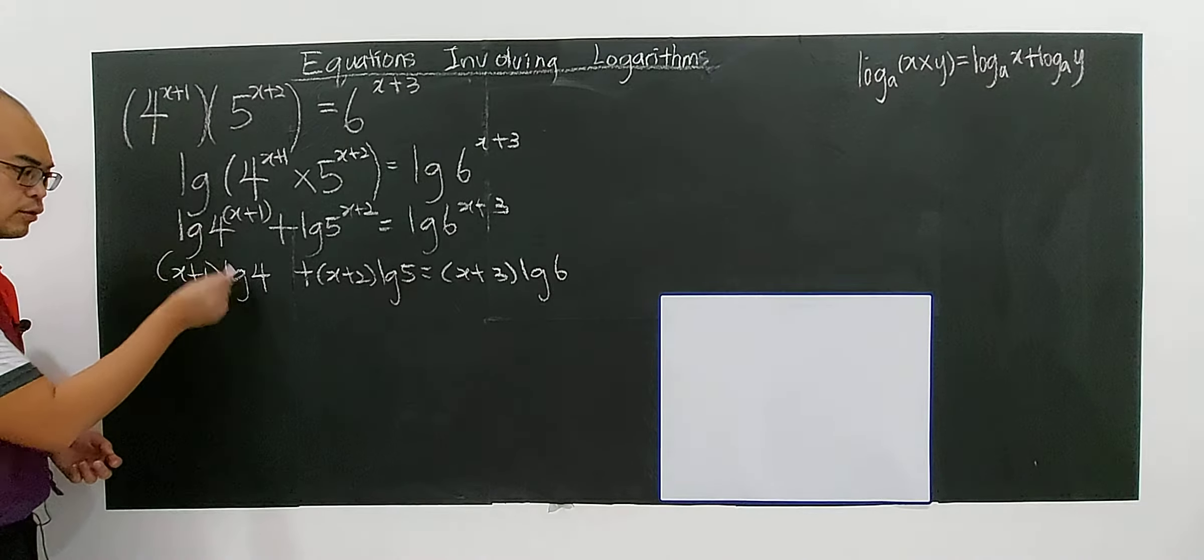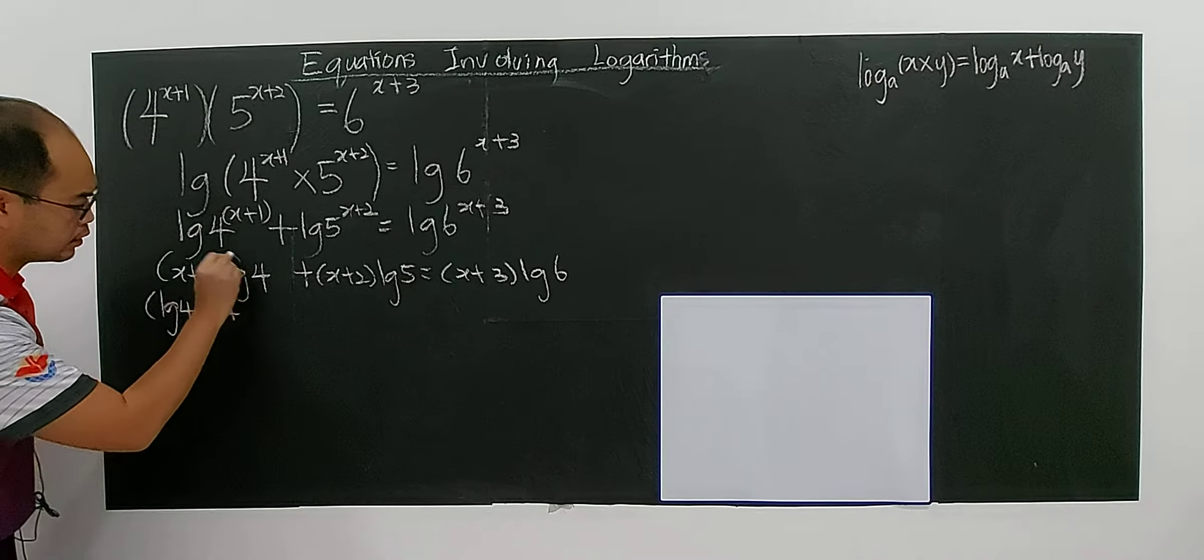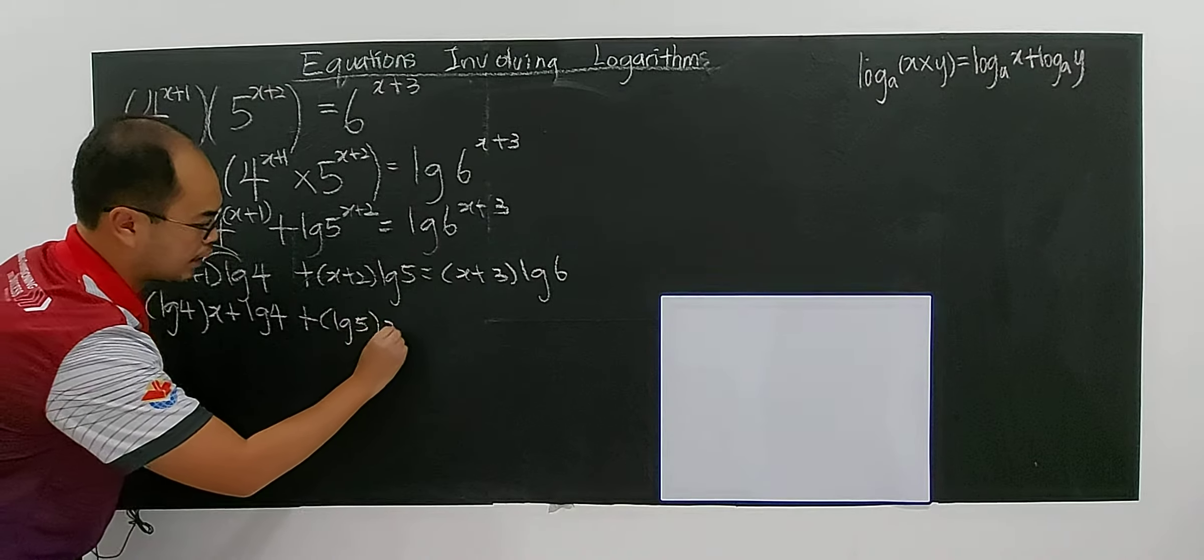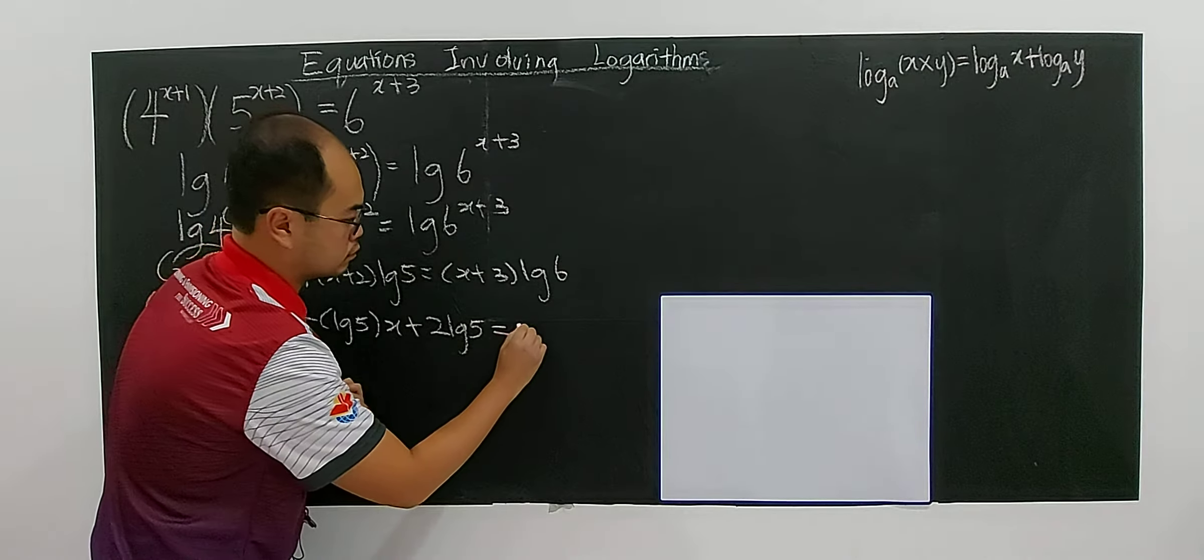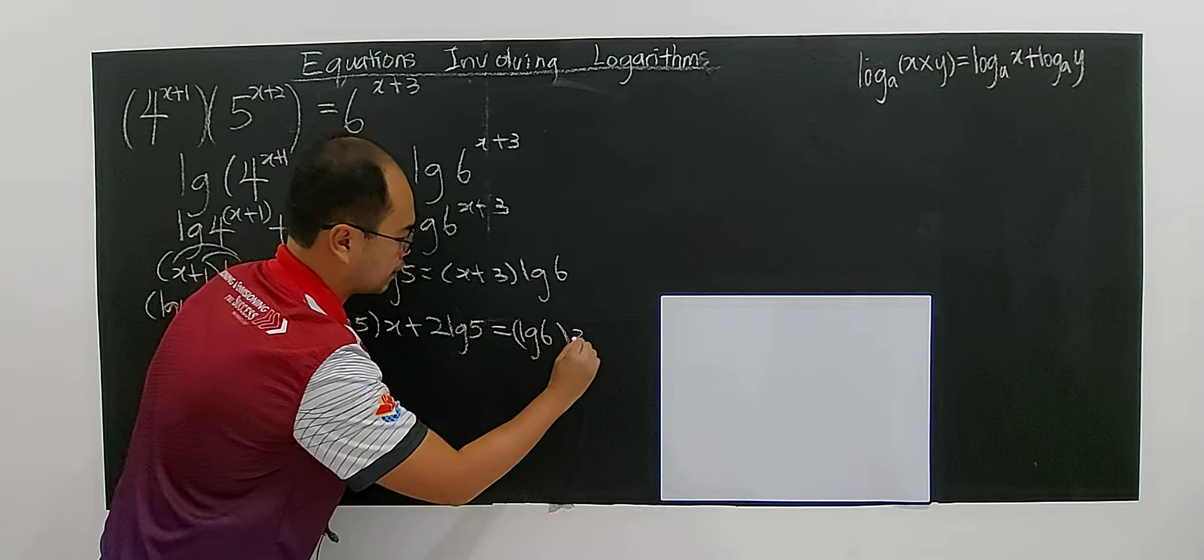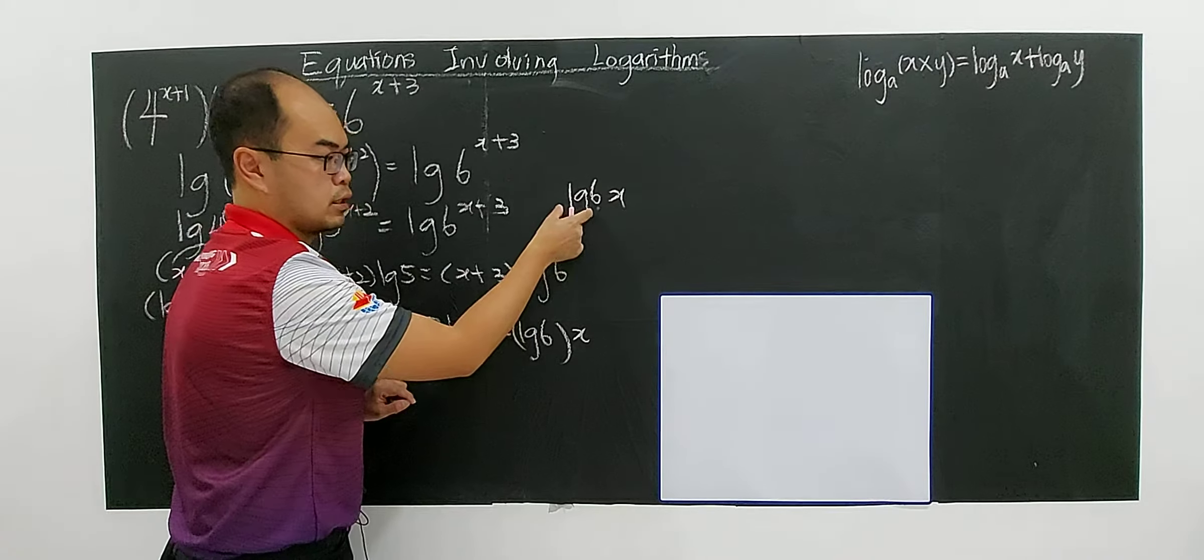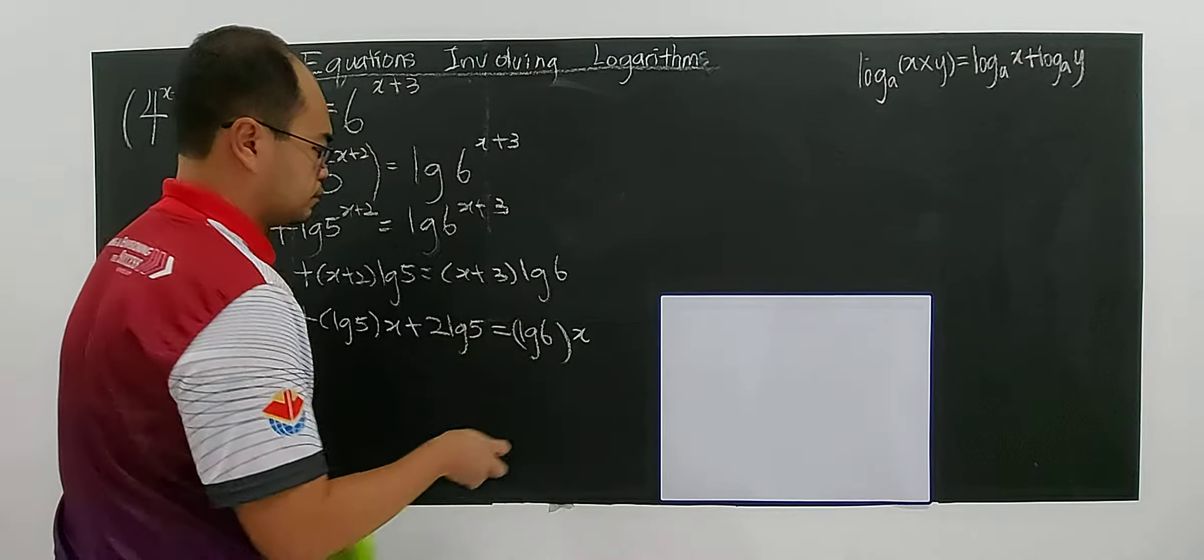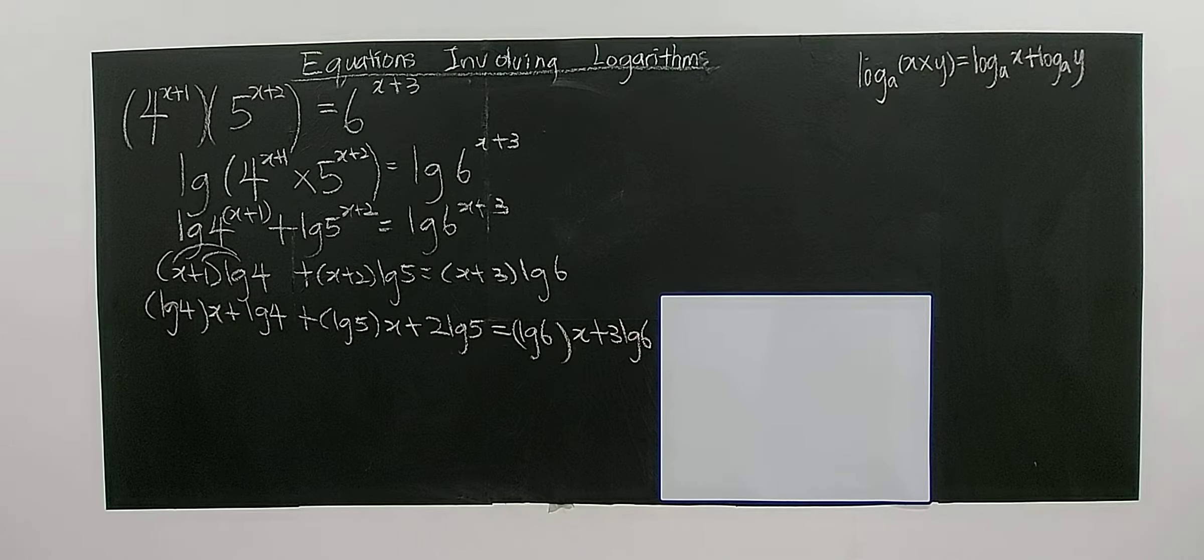Expanding: log4·x + log4 + log5·x + 2log5 = log6·x + 3log6. We don't write 'log6x' without brackets because that means 6x is inside the log. That's why I put brackets. Now you have all the terms with the unknown x and the constant terms.